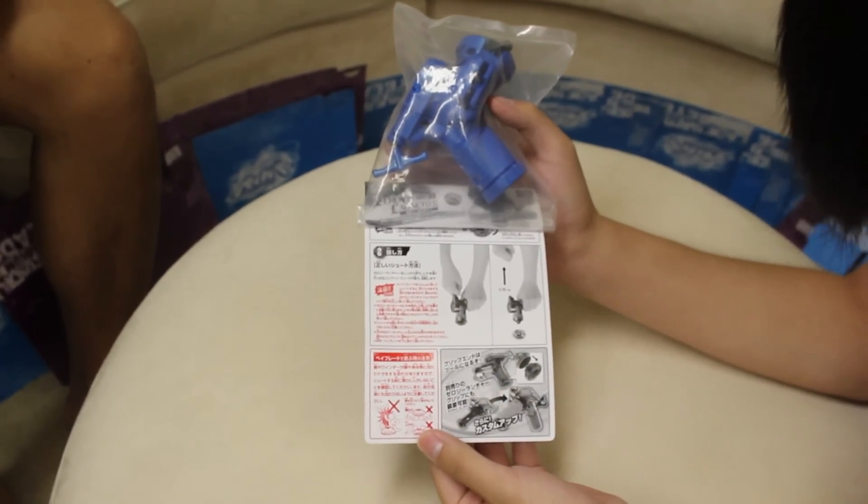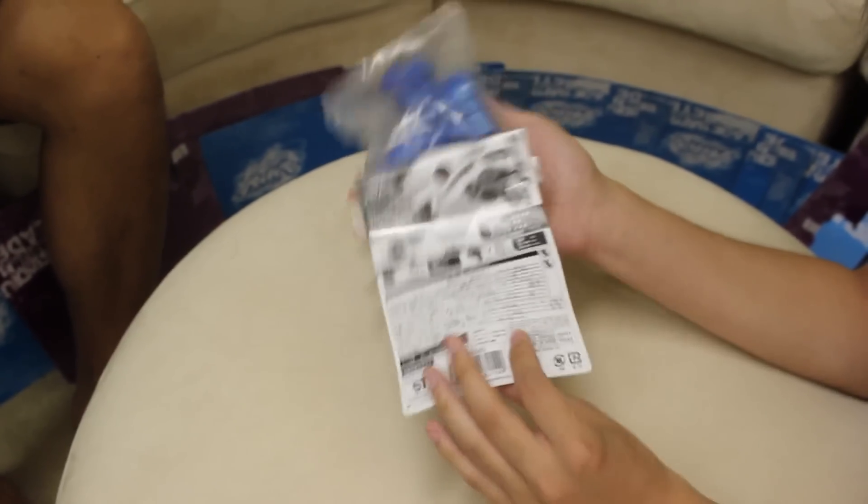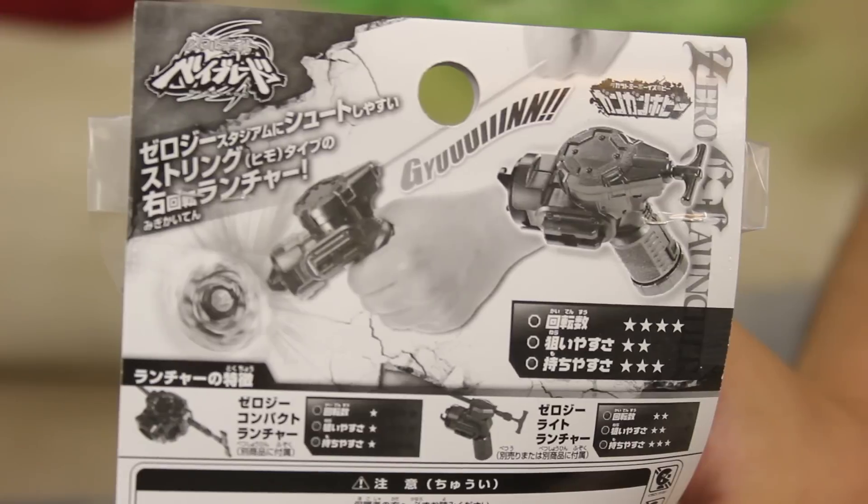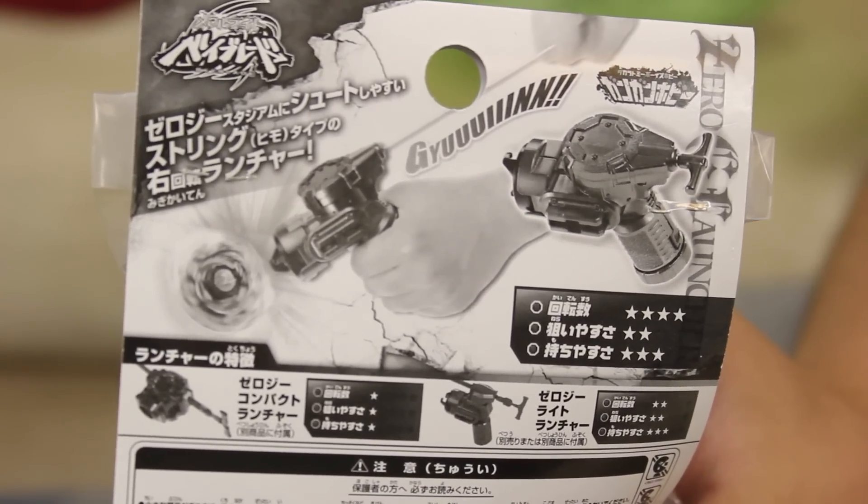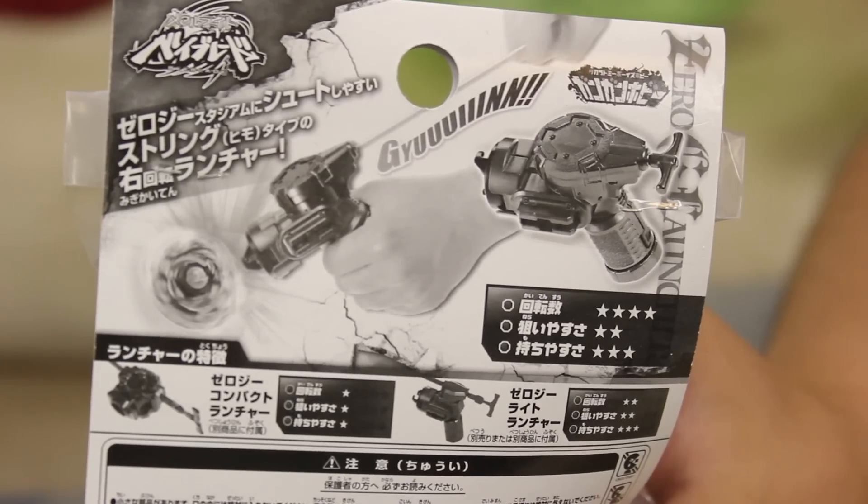So on the back it shows like it has the most stars out of all the launchers. This is like something about spin power and stuff that has most. Obviously compact launcher is like the worst one, you know, it's kind of sad to look at.